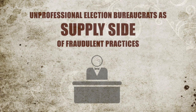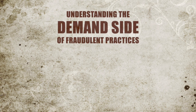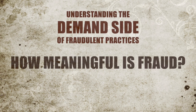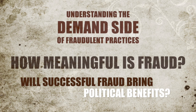Bureaucrats who were able and willing to influence elections can be considered a supply-side factor, and Theorell's research shows how this supply was reduced in the late 18th century. But what about the demand side? Demand for committing fraud is related to how meaningful it would be — if even successful fraud would not bring any political benefits or power, why take the risk of getting caught?